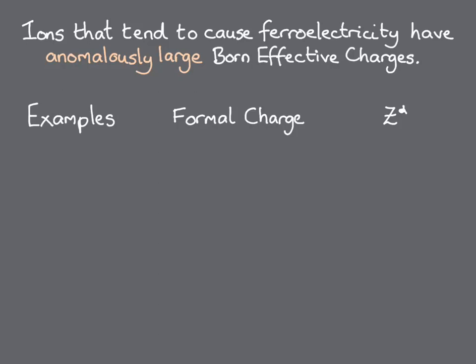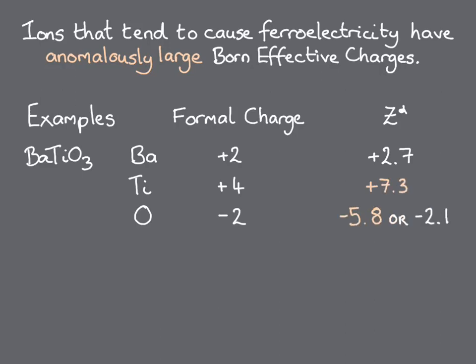Let's compare some effective charges and formal charges in some examples. In the prototypical ferroelectric material barium titanate, the formal charges on the ions are plus two for barium, plus four for titanium, and minus two for oxygen. The ferroelectricity is caused by the titanium ion moving closer to one of the oxygen ions, where it can form a good chemical bond. This is reflected in the born effective charges, which are plus seven point three for the titanium ion and minus five point eight for the oxygen that it bonds to. We call these values anomalous born effective charges. The other two oxygen ions in the unit cell, as well as the barium ion, have born effective charges that are close to their formal values.